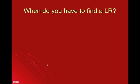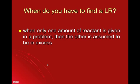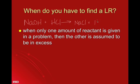So, when do you have to deal with finding a limiting reactant? Well, so far all of the questions we've been working on, I've only given you one amount of a reactant. In that situation, you get to assume that any reactants you weren't given a specific amount of are in excess. For example, in a neutralization reaction — if I said you have five grams of sodium hydroxide, how much salt can you make? — you get to assume the hydrochloric acid is in excess.